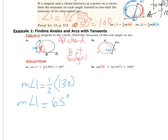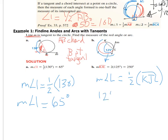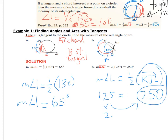In example B, they give you the angle measure instead. The angle at vertex L is 125 degrees, and we need to find arc KJL — the intercepted arc. Since the angle equals one half the arc, we work backwards: 125 times two gives us arc KJL equals 250 degrees.